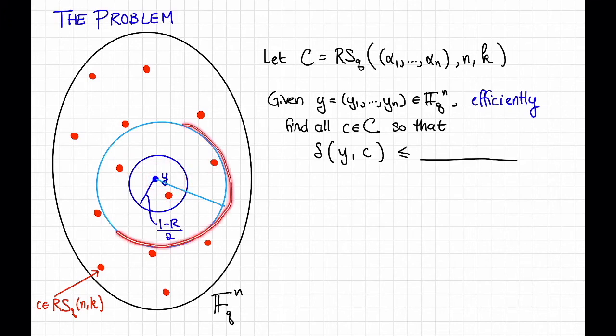Okay, so how big can this ball be for us to still hope to be able to do that? If the ball gets too big, then at some point it's going to contain exponentially many codewords. We can't really hope for an efficient algorithm, a polynomial time algorithm, to return exponentially many things, because it would take an exponential amount of time just to return the output. So we should focus on a radius where we know that there's only at most a polynomial number of points in the ball.